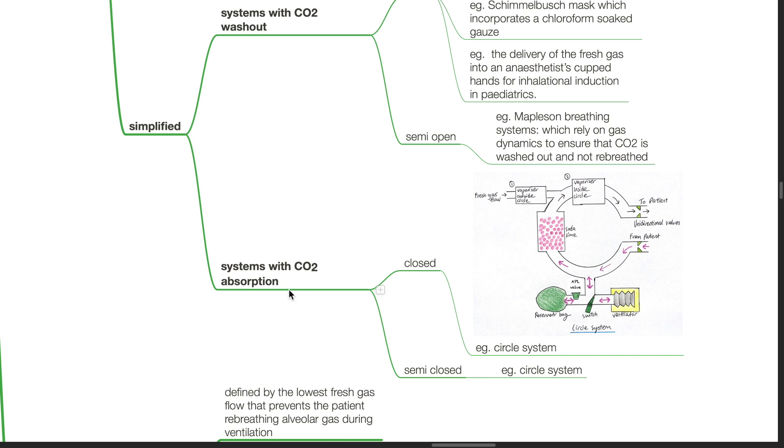Systems with CO2 absorption, for example, closed systems such as the circle system. The circle system can also be used as a semi-closed system.